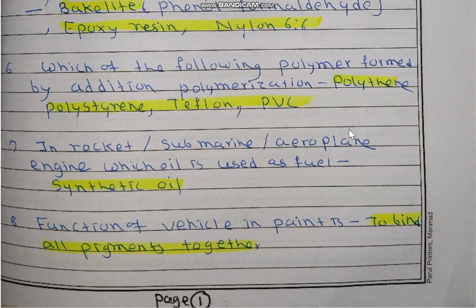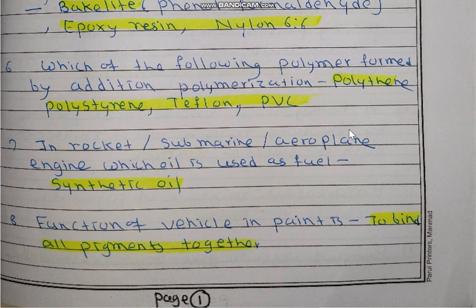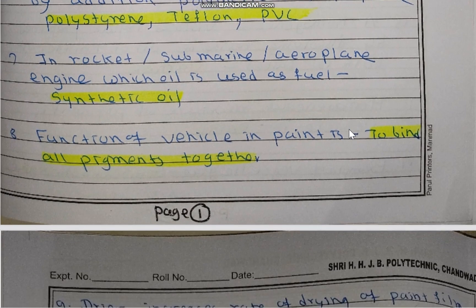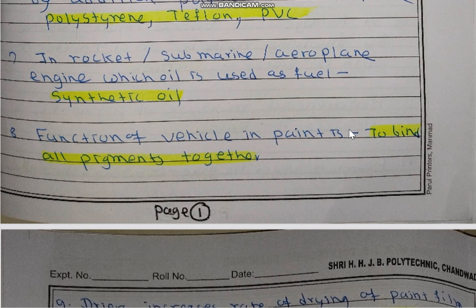Another example is urea formaldehyde. Which of the following polymers are formed by addition polymerization? These four examples are: polythene (also known as polyethylene), polystyrene, Teflon, and PVC. They are formed by addition polymerization.